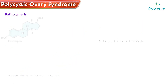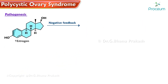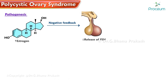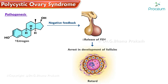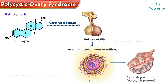This excess estrogen causes negative feedback at the pituitary to decrease the release of follicle-stimulating hormone. Decreased FSH causes an arrest in the development of follicles, and their further development is not possible due to low FSH levels. Hence all of them retard at that stage and undergo cystic degeneration, producing a polycystic pattern.